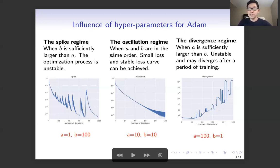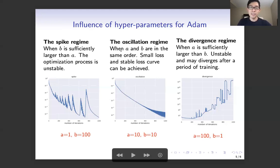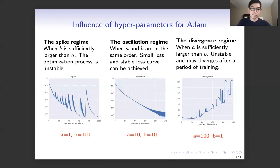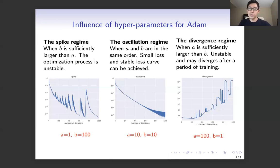On the other side, when A and B are in the same order, there are no big spikes — instead there are small oscillations. The loss curve is generally stable and smooth, and a small loss can be achieved. We call this the oscillation regime. Finally, when A is bigger than B — meaning the memory of the second-order momentum is shorter than the first-order momentum — the loss curve is unstable and the iterator will often diverge, as shown in the figure on the right where the loss becomes very large after some iterations. We call this the divergence regime.